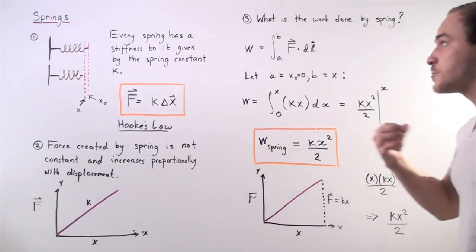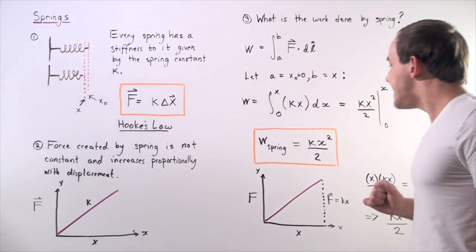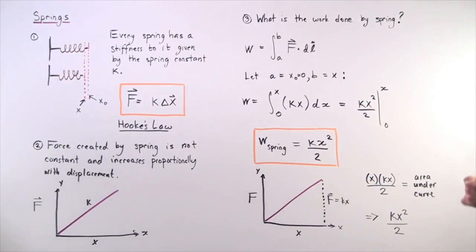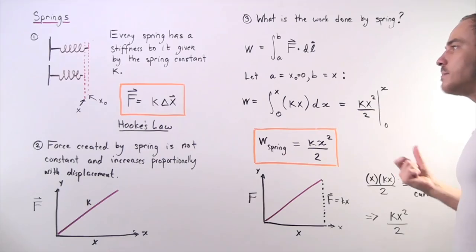So the spring, the work that the spring does, or the work that we must do on the spring, is equal to the spring constant multiplied by the square of displacement divided by 2.